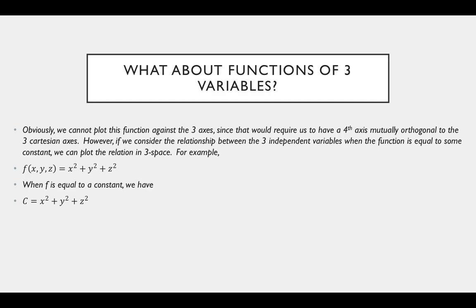Going back to the level curve analogy: what we did was set z equal to some constant and plotted an intersection curve that happened in three-space, then plotted that intersection curve in the xy plane — bringing it down to two-space. The same corresponding thing we're doing here is taking a function of three variables, which exists in four-space, setting it equal to a constant, and plotting that relationship in three-dimensional space.